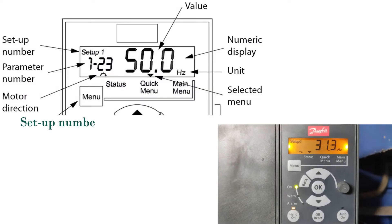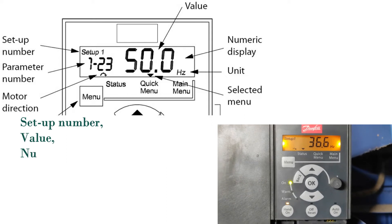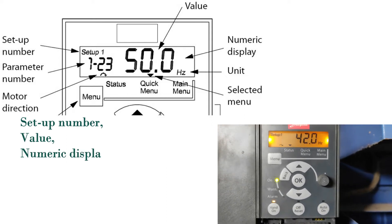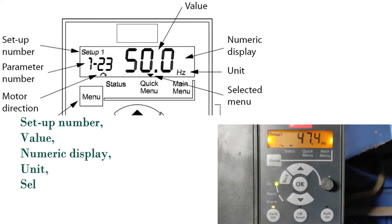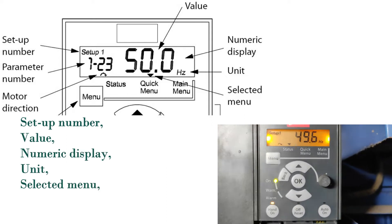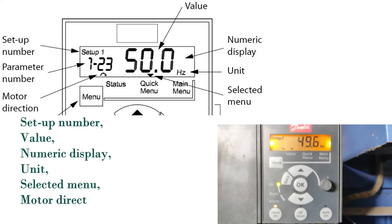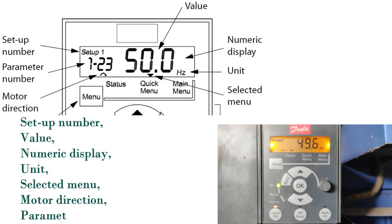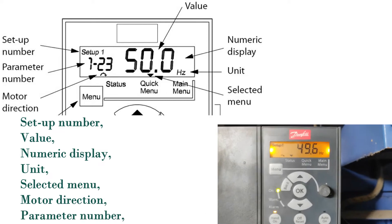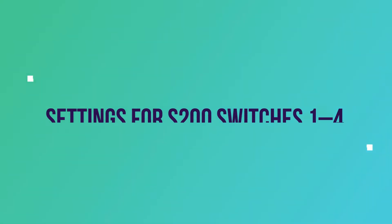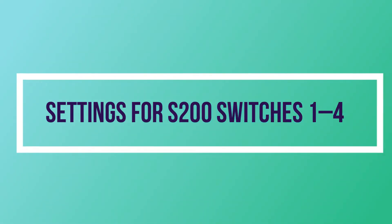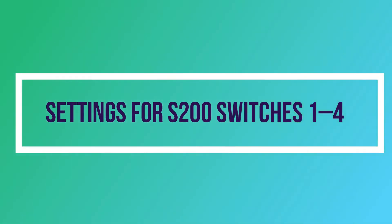Inside the LCP display: setup number, value, numeric display, unit, selected menu, motor direction, and parameter number. Settings for S200 switches 1 to 4.